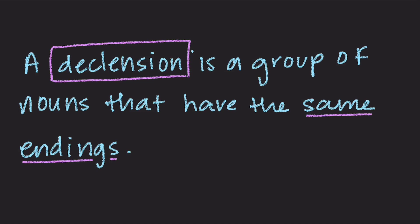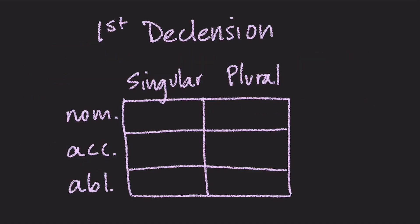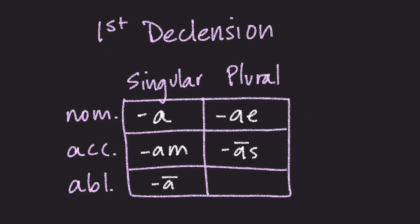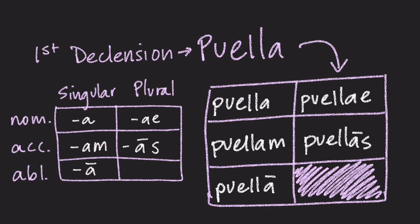Let's look at our noun charts again — you have these in your foldable. Let's take a look at our first declension nouns. First declension nouns end in A, AM, and long A in the singular, and A-E and A-S in the plural. These are words like Puella. The way we put Puella into its different forms is: Puella, Puellam, Puella, Puellae, and Puellaes.